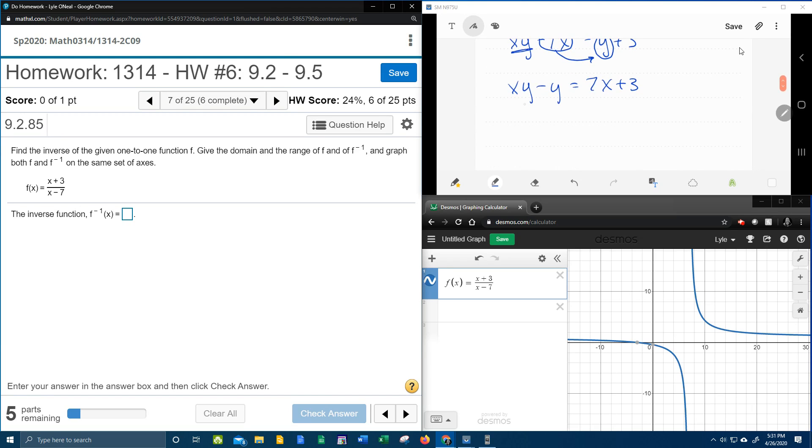Now, notice that I now have two terms on the left that both have a y, and I can use the six-letter f-word. You're right, that is factor. I'm going to factor out the y. And that's going to leave me x minus 1.